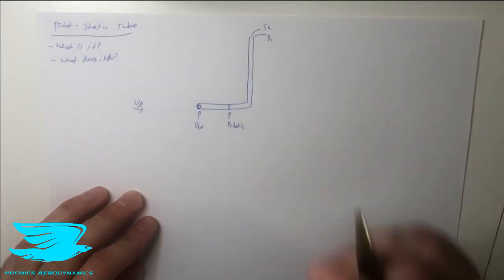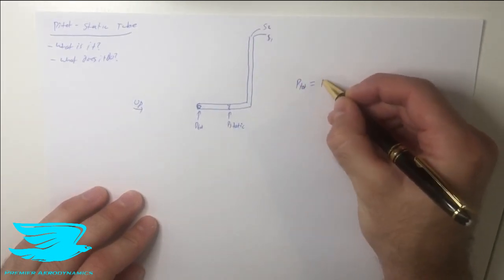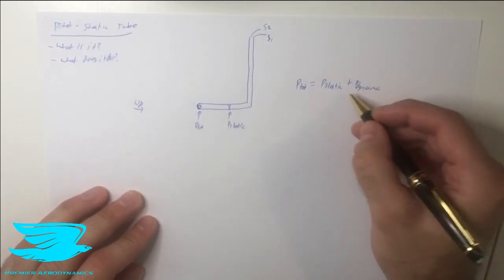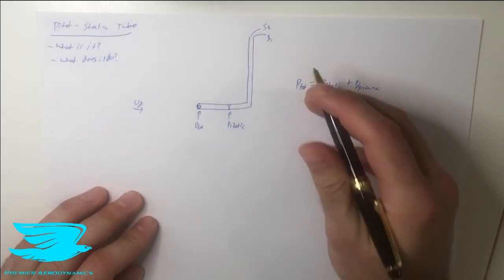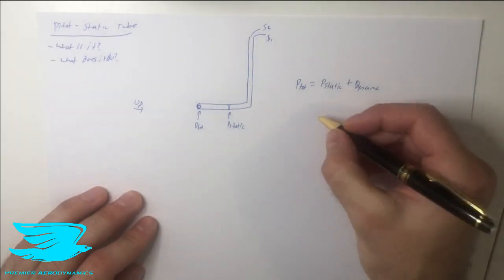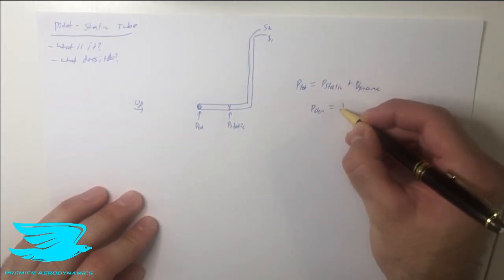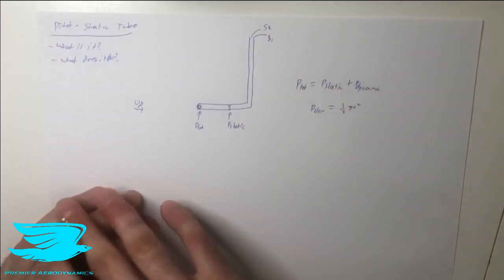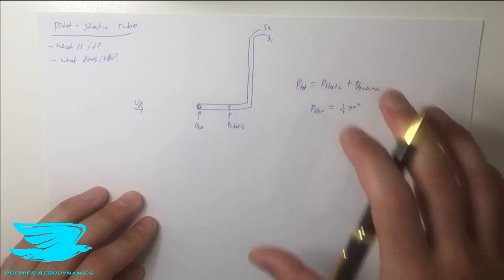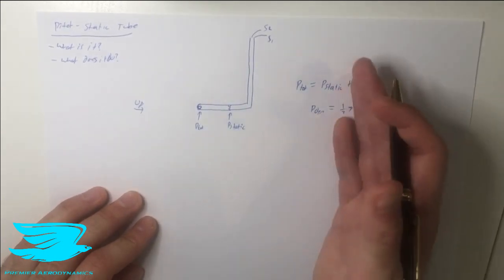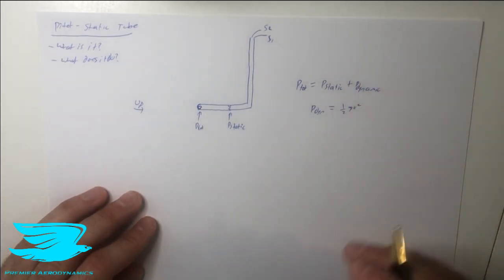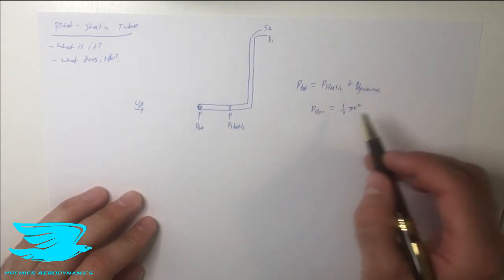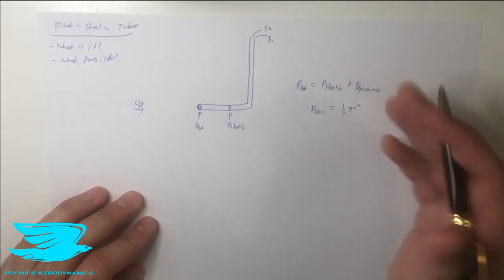Now, assuming you know what total pressure, static pressure, and dynamic pressure are, here is the key equation: total pressure equals static pressure plus dynamic pressure. The dynamic pressure equals half times density times velocity squared. We use this in the lift coefficient, the drag coefficient, and many non-dimensional coefficients. So if we measure total pressure and static pressure, we can rearrange to find dynamic pressure, then rearrange again to find the velocity — so now we know the velocity of the free stream flow.